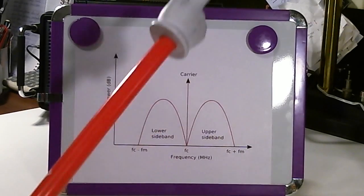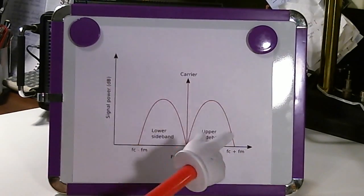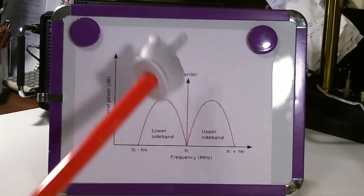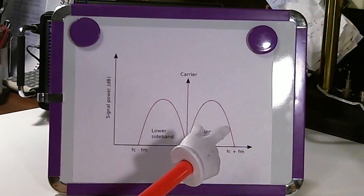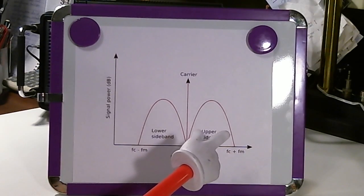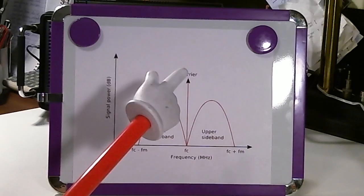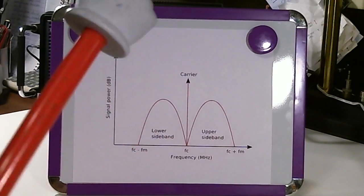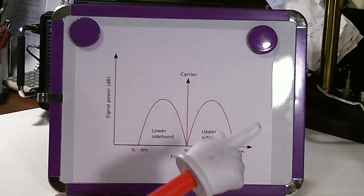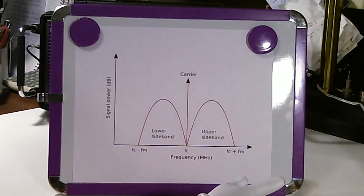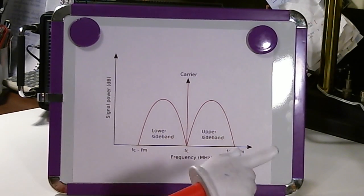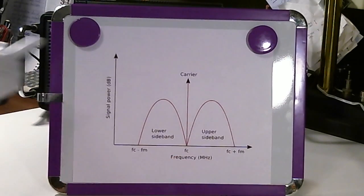It turns out — and I don't fully understand it — you also get more power out of the single sideband configuration. But that raises the question: why don't international broadcasters transmit in single sideband?